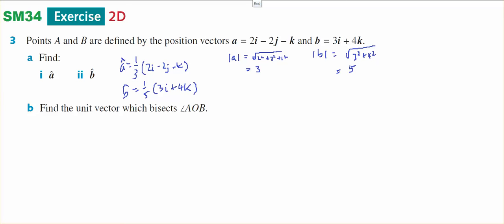3A asks you to find the unit vector of A and the unit vector of B, and I've already done that. A is 2I minus 2J minus K, therefore the square root of 2 squared plus 2 squared plus 1 squared, which gives you the square root of 9, which is 3. And B is the square root of 3 squared plus 4 squared, which is 25, so 5.